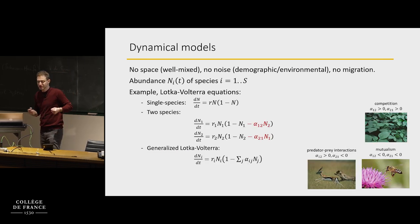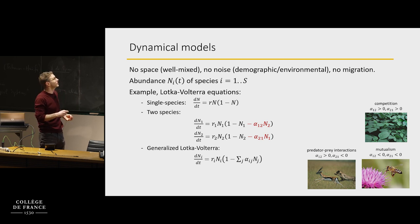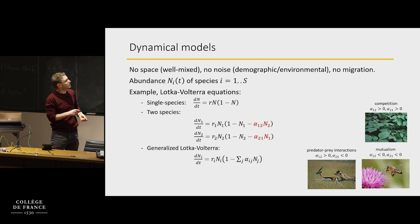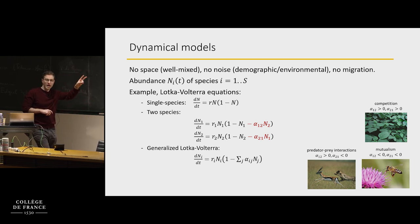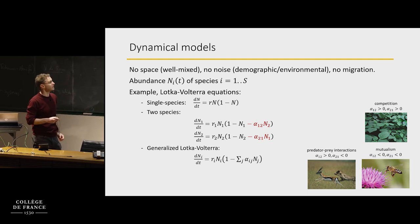When you have two species, you put logistic equations for each and then add an interaction term. You have a bilinear interaction N1 times N2 with a prefactor, and the same for the other species. If both prefactors are positive, that models competition. If one is positive and one is negative, that models predator-prey interactions. If both are negative, that models mutualism. So it's quite rich already for two species.